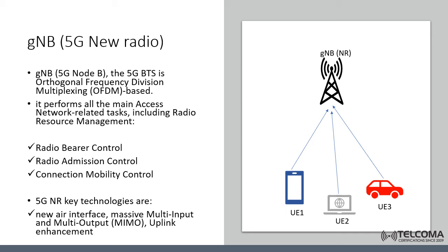The G Node B in its basic form connects to the 5G core network through the NG reference point, where reference point means the interface. Although some types of G Node B can be connected to 4G EPC instead of 5G core in the case of non-standalone deployment. The G Node B performs tasks related to radio access management, including radio bearer control, radio admission control, connection mobility control, and dynamic allocation of resources to the user equipment.